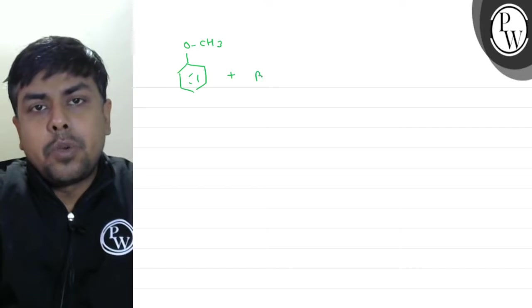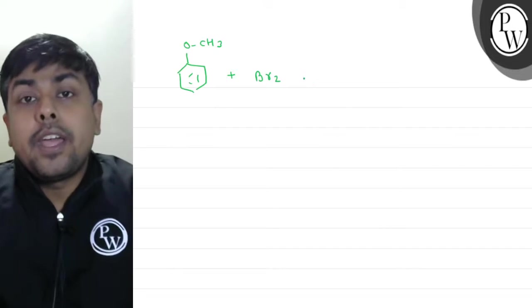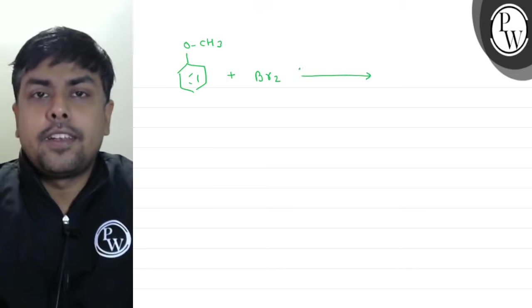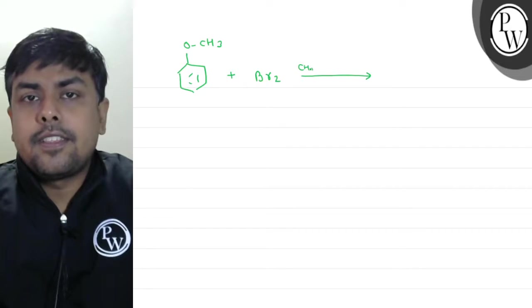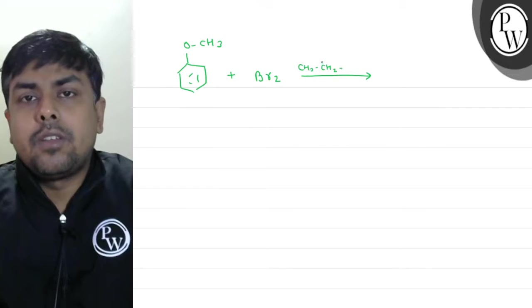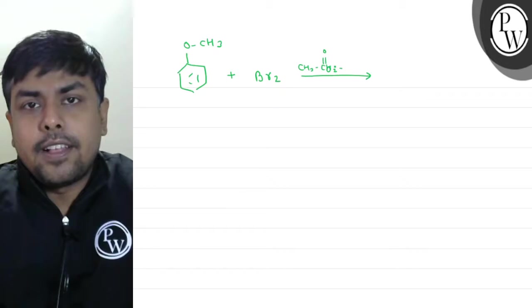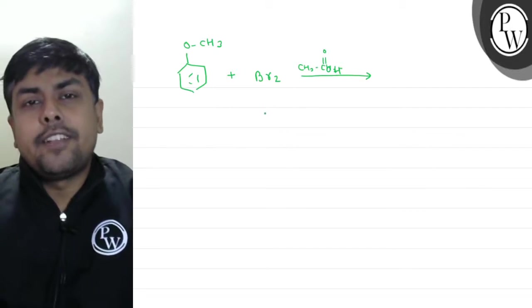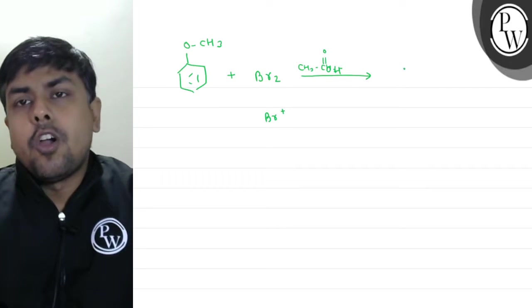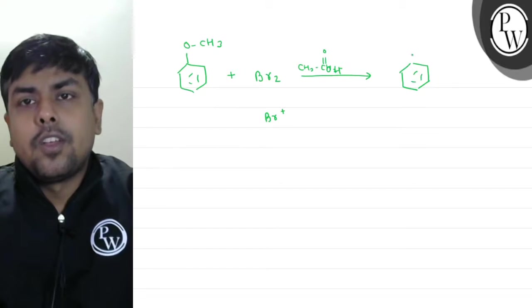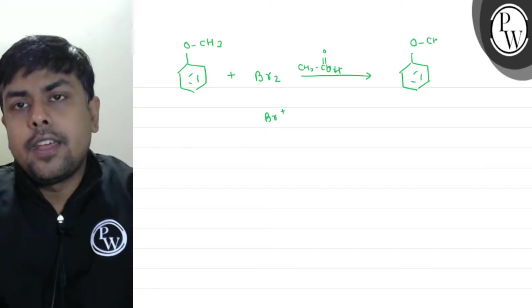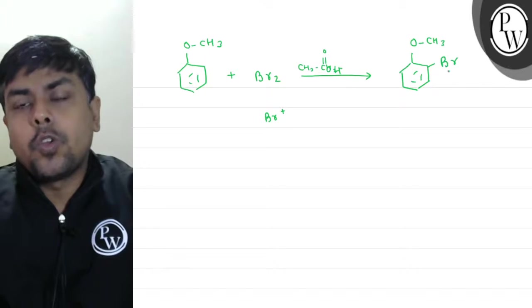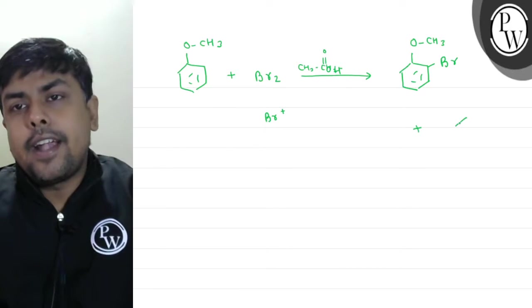I'm reacting it with Br2 in the presence of ethanoic acid: C-H-3, C-O-O-H. We can write it as ethanoic acid. Here again, the electrophile generated is Br positive. And this Br positive will simply come and will join O-C-H-3, Br once at ortho and once at para.